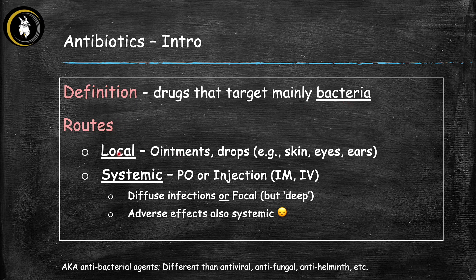The main routes of administration are either local or systemic. Local means you're administering the antibiotic locally to a focal area in the body — usually ointments, creams, or drops that you put on the skin, in the eyes, and the ears. The more common way we give antibiotics is systemic, meaning the antibiotic gets absorbed to the entire body. This is given either PO (oral) or in injection form.